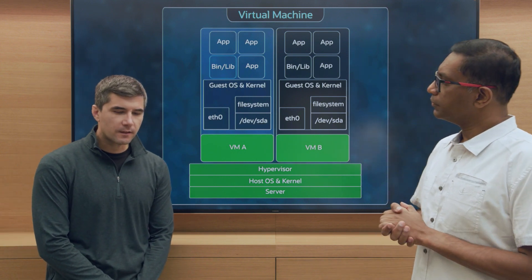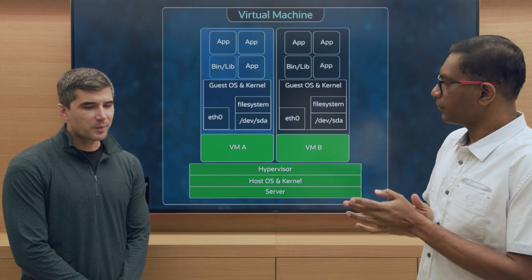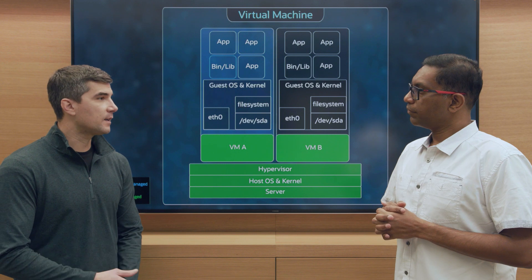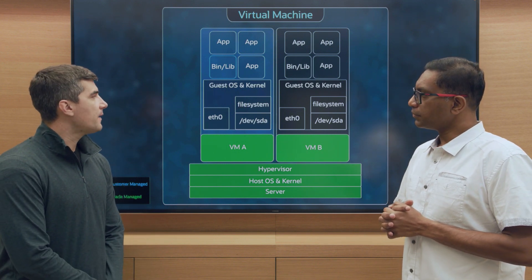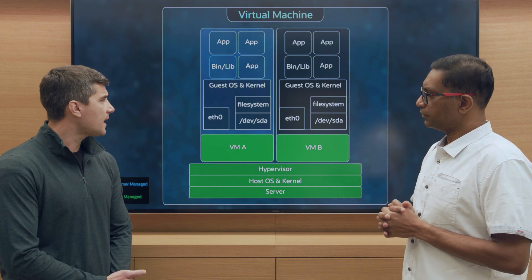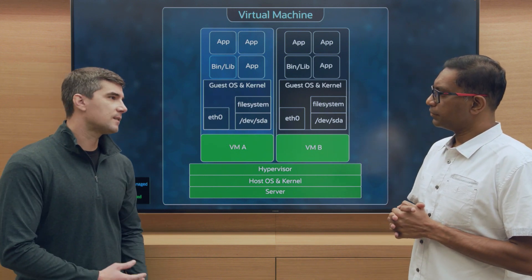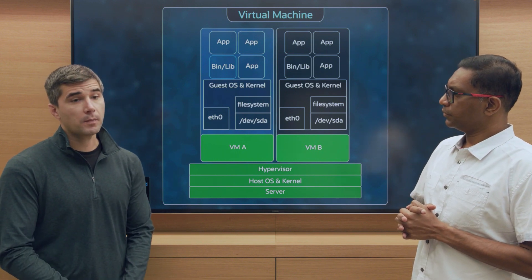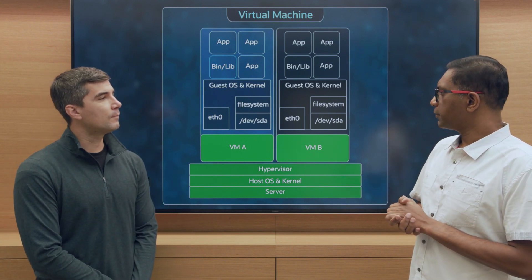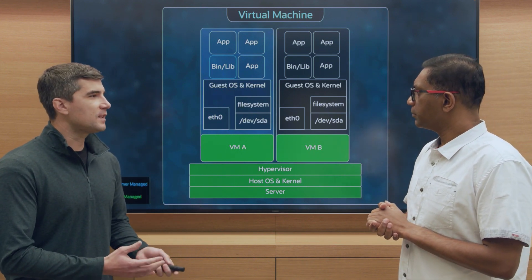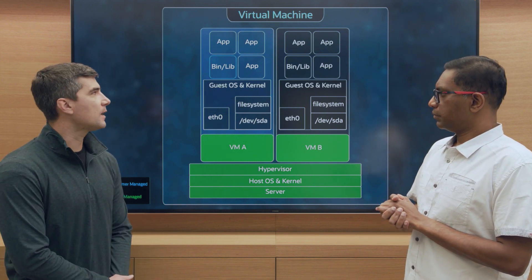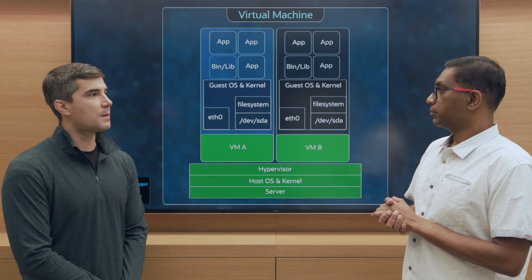We'll start with VMs first since historically they've been the building block for compute workloads in the cloud. You have a hypervisor that's running and scheduling multiple VMs on the same server, and then inside that VM there is its own guest OS, guest kernel, dedicated I/O devices like a vNIC to get to virtual networking, and a file system on top of a block device for storage.